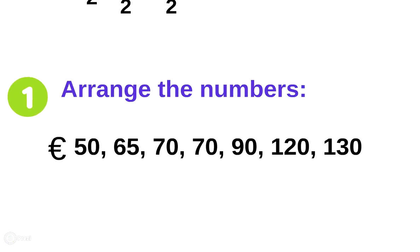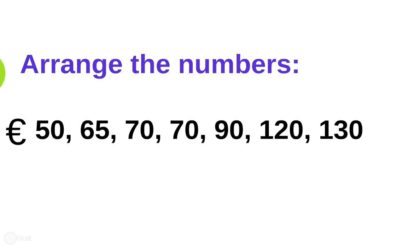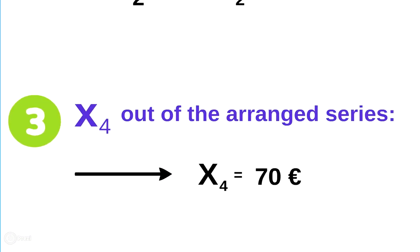We receive the following order: 50, 65, 70, 70, 90, 120, and 130. As n is 7 and therefore odd, we use the first formula. We get x̃ equals x subscript (7+1)/2, so we calculate x subscript 4. The last step is to find the fourth number in the arranged series. We receive the price of 70 euros — meaning 50% of all offered smartphones are priced at a maximum of 70 euros.